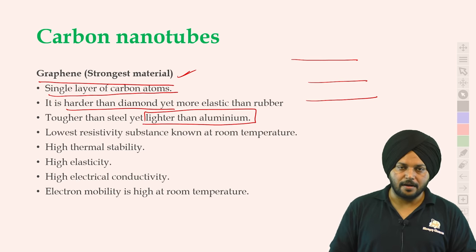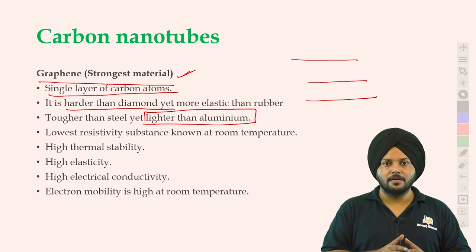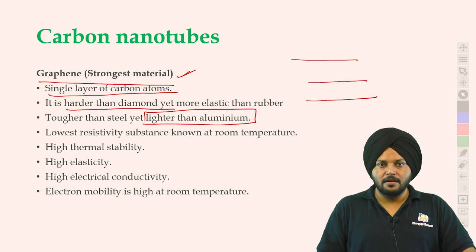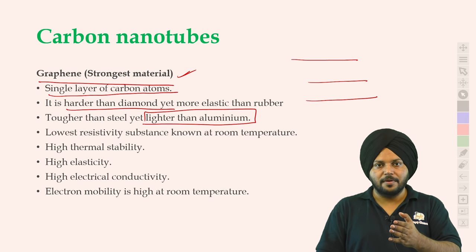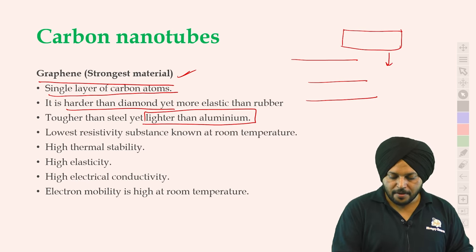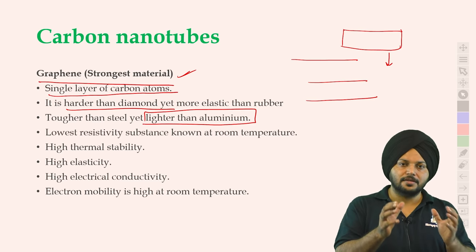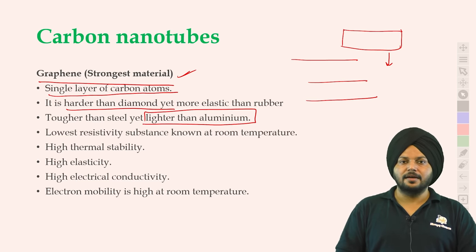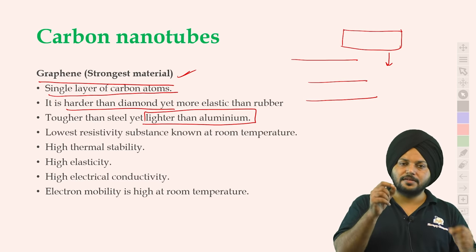जैसे television है — सबसे पहले बहुत बड़े-बड़े टेलिवीजन आये थे, अब with the time उनकी thickness बहुत कम हो गई है। लेकिन फिर भी यह breakable है — गिरेंगे तो टूट जाएंगे। जितनी thin भी आती है, वो easily break भी होती है। Technology से हमने यही सीखा है कि जो thick material की properties थीं, उनको हमने thin material के अंदर convert किया। ऐसे ही material है — graphene।